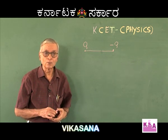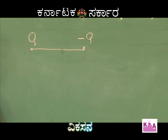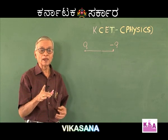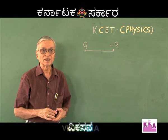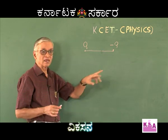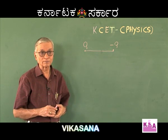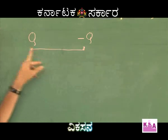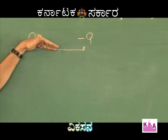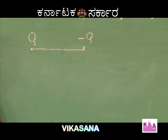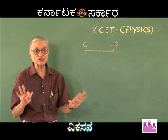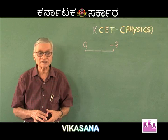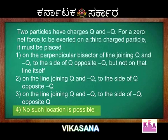Please note one very important point here. To decide where the null point lies, note that the null point should be closer to the smaller of the two charges. Here, that question does not arise because the two charges are equal in magnitude. Therefore, the null point cannot be anywhere — either above or below the line joining the two charges. Hence, there is no location at all in the neighborhood of the system where the electric intensity is zero. Therefore, the correct option is: no such location is possible.